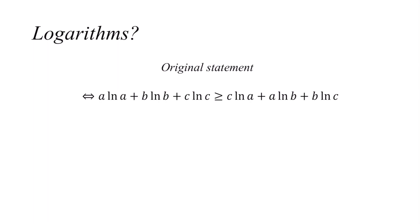If you rearrange this you get (a - c) ln a + (b - a) ln b + (c - b) ln c ≥ 0, which doesn't really seem to help. So what do we actually do with such a simple looking inequality?